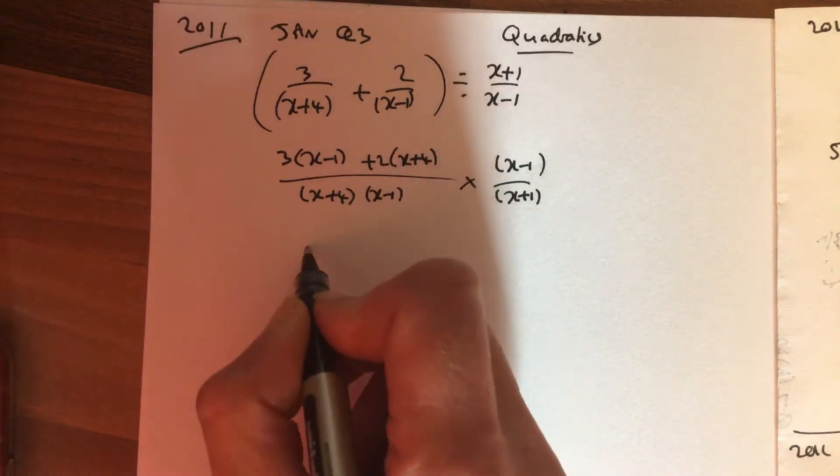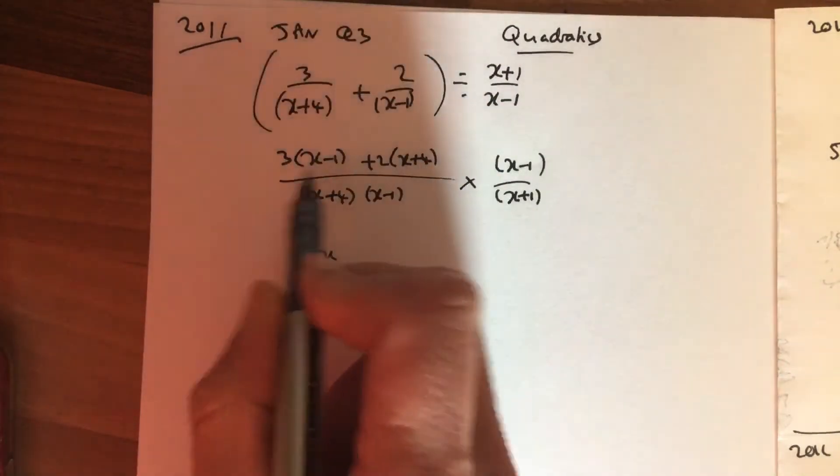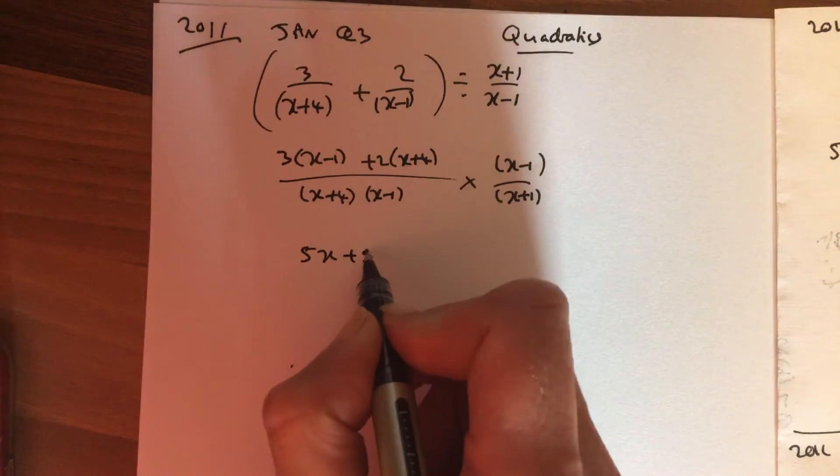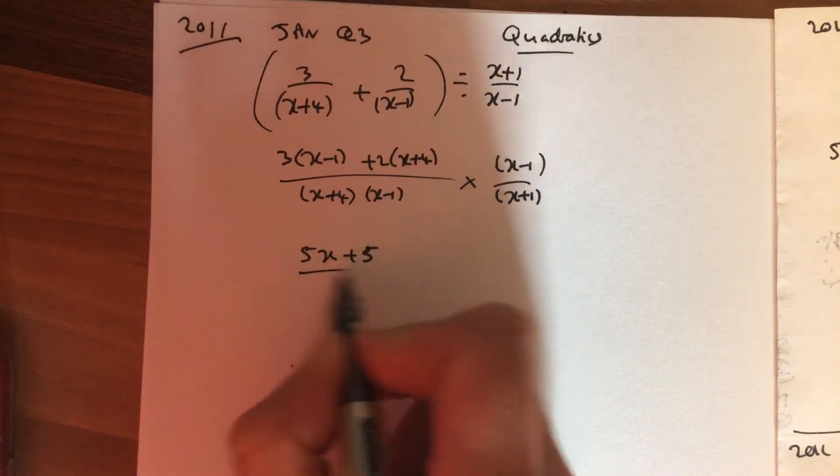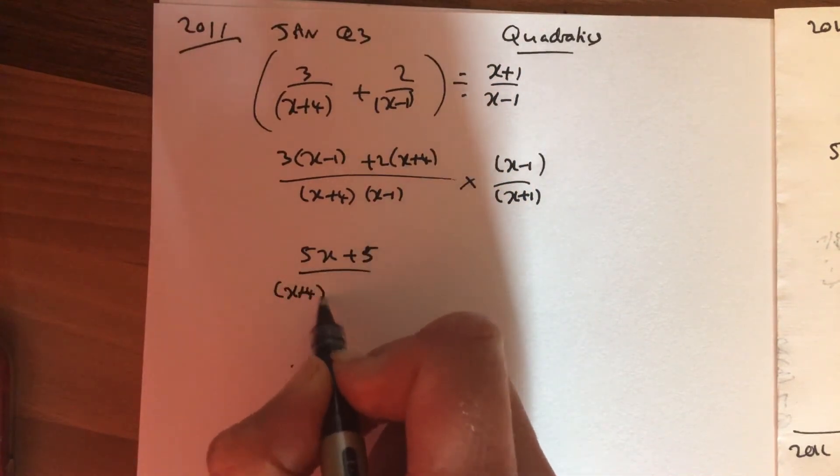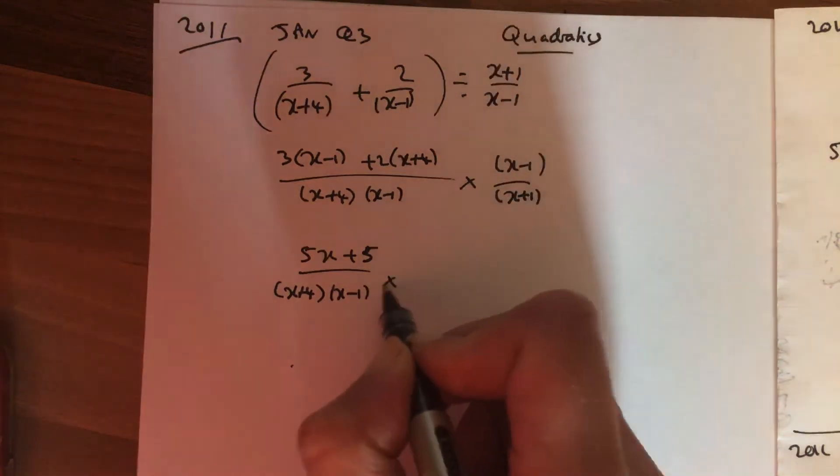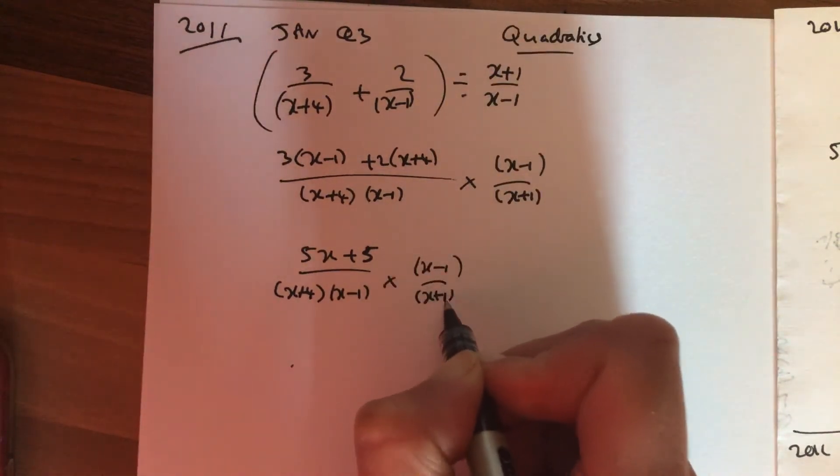3x add 2x minus 3 add 8, over x plus 4, x minus 1, times x minus 1, x plus 1.